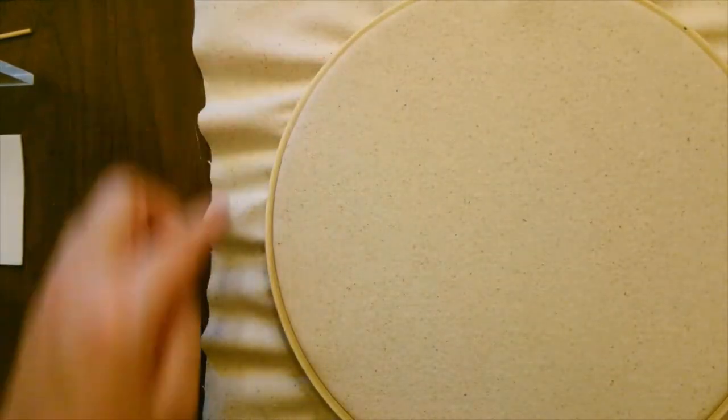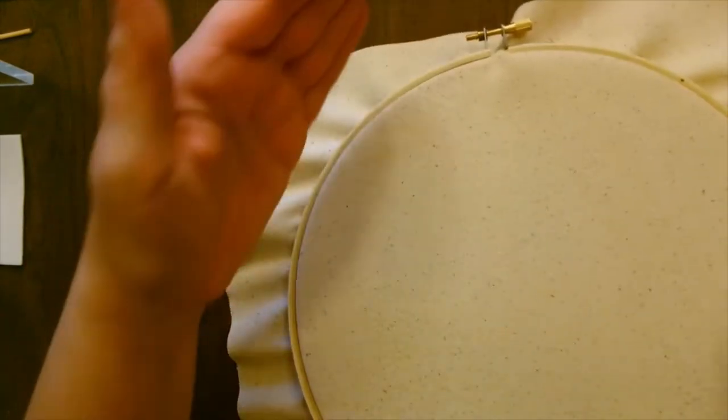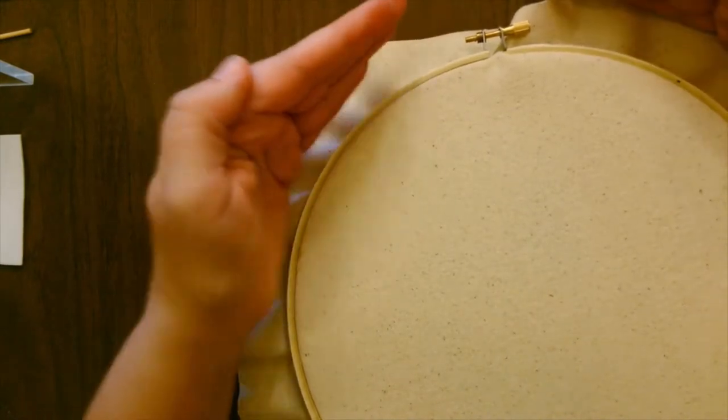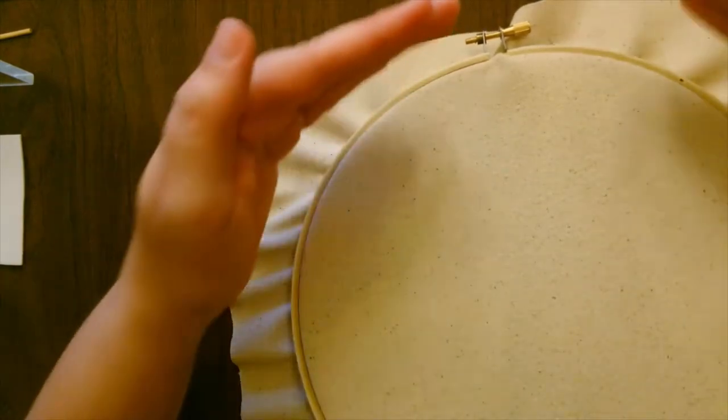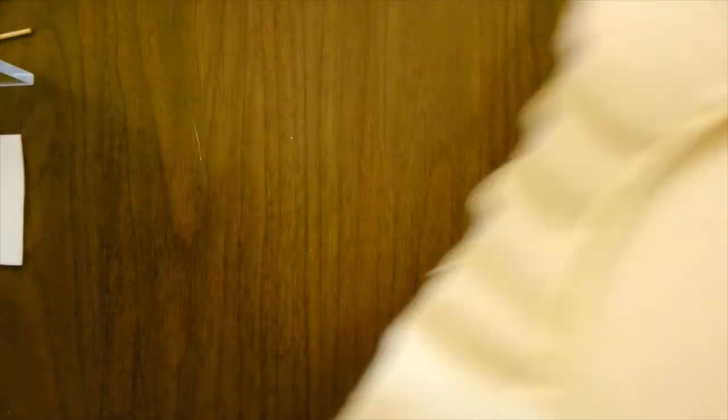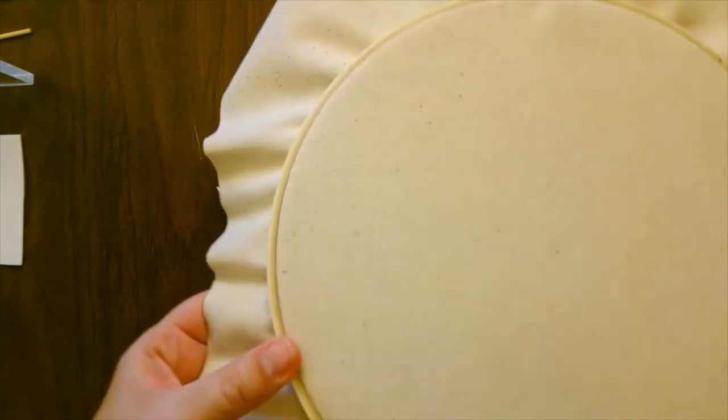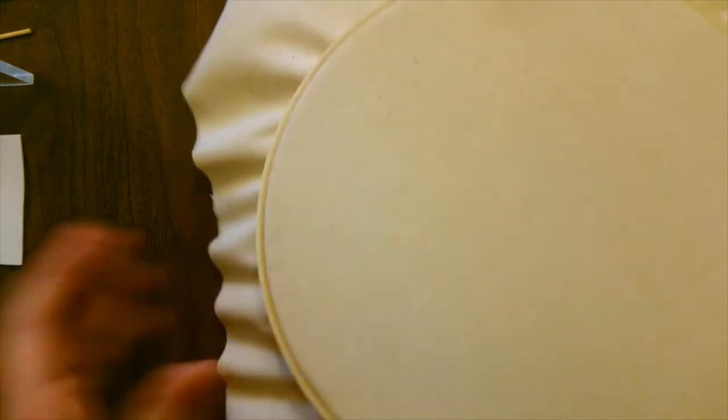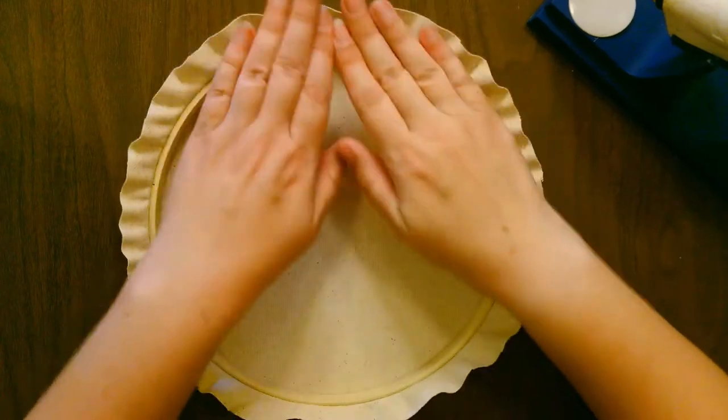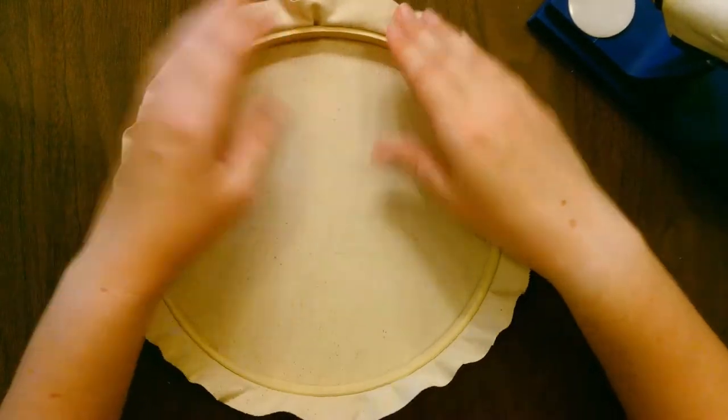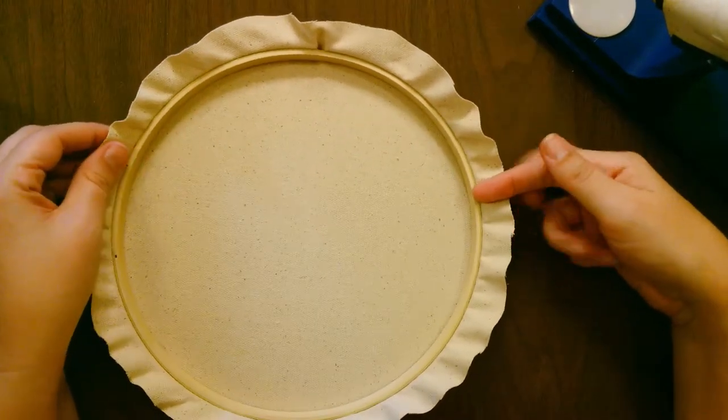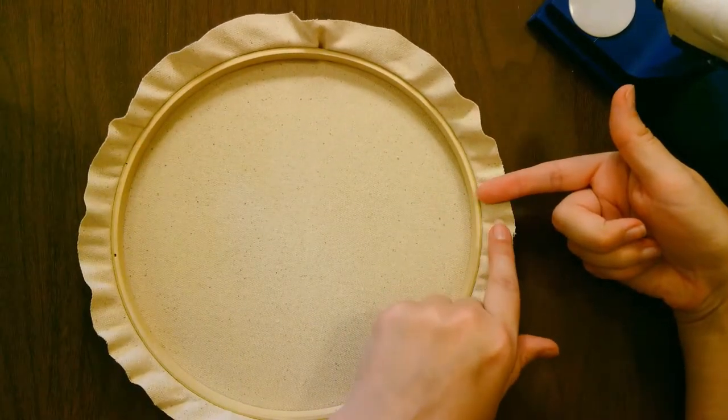The next part is to trim. You want to trim off all these corner pieces, about this much. You don't want to cut it too close because you want to be able to glue it down. So you just want to trim off these big corners. You can see it looks a little bit like pie crust. You just kind of trim around it in a circle, about a finger's worth.